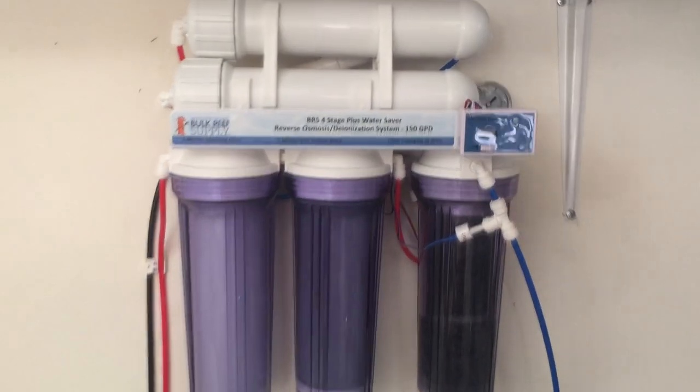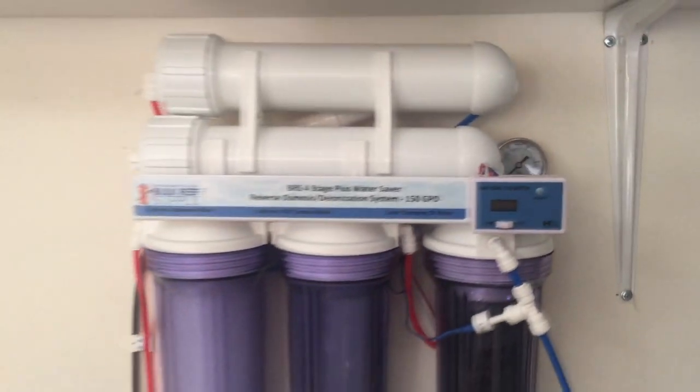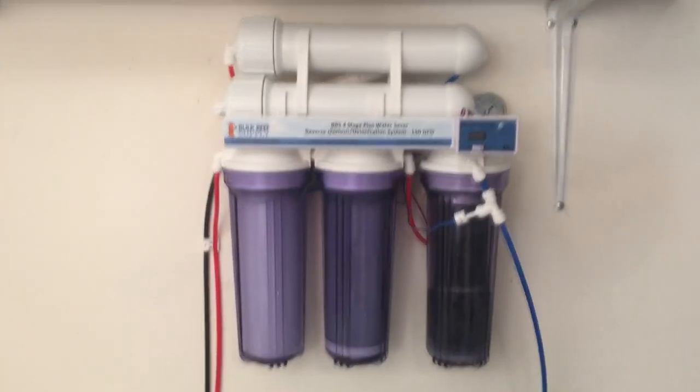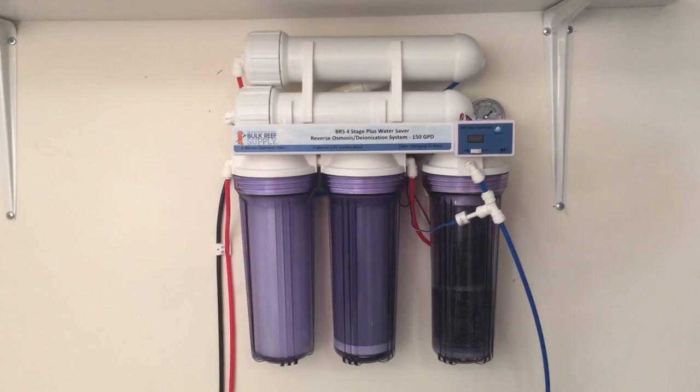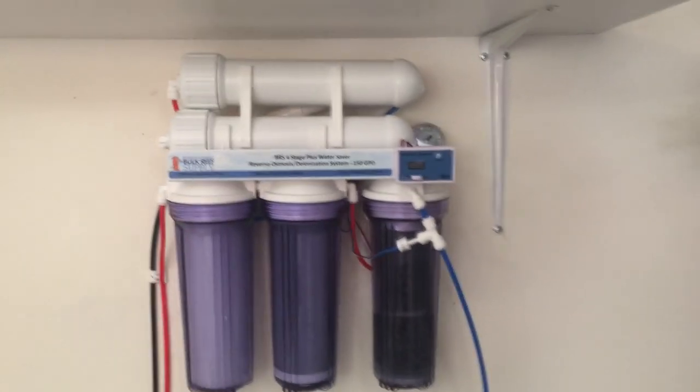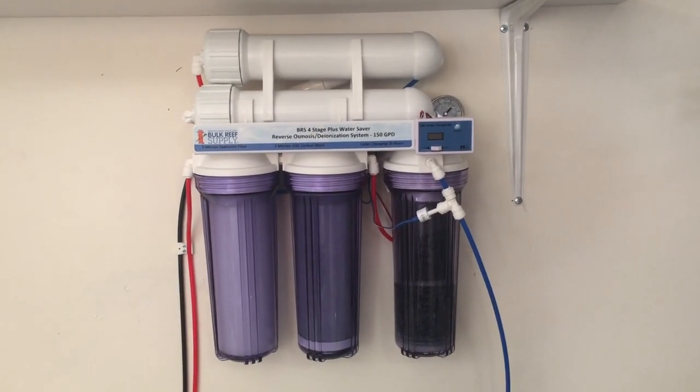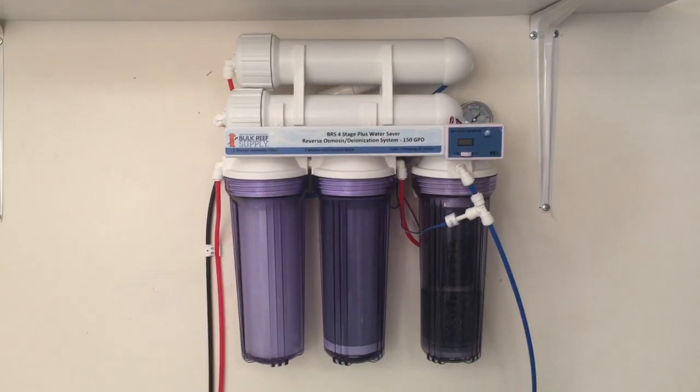Hi. When I was testing the RODI unit, I noticed the water pressure is at 55. That's fine for a 75 gallon per day unit, but with the double water saver package, it actually has 150 gallons a day. The water pressure should be between 65 and 80. So I bought a booster pump, and today I'm going to install it.